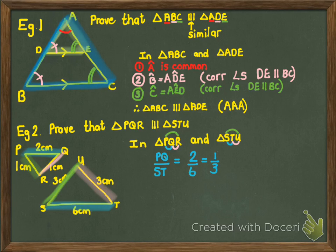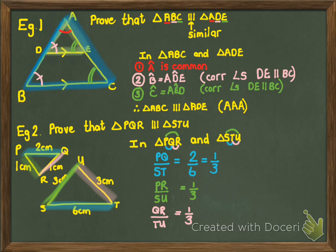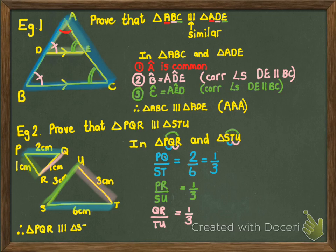That ratio tells us one side is three times longer than the other. Checking the green pair, PR compared to SU: one centimeter compared to three — ratio one third. And the purple pair, QR compared to TU: also one to three. So the big triangle is three times bigger on all sides, which means they're in proportion. If any one of these wasn't a third, it wouldn't be in proportion — each side has to increase by the same factor. Therefore triangle PQR is similar to STU; reason: sides are in proportion.